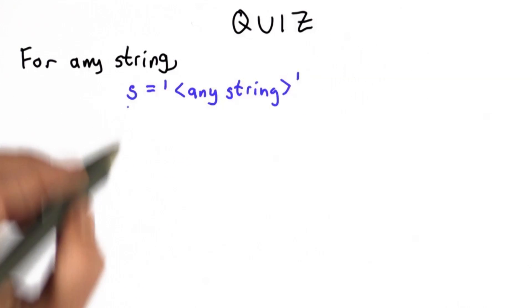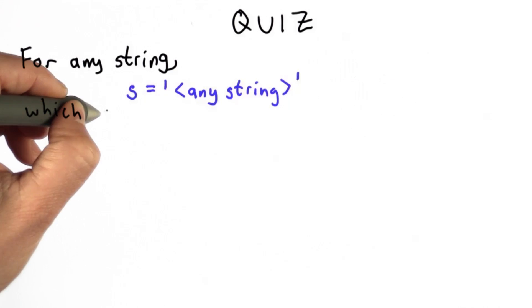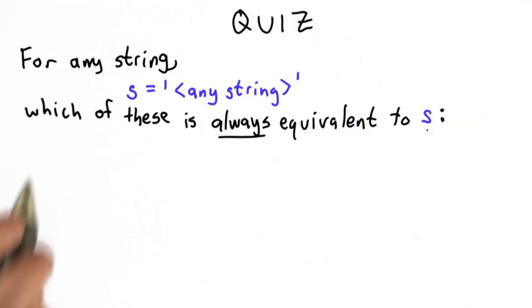So for this one, you're given any string s, so s is a variable. It holds the value of any string. And the question is, which of these are always equivalent to the string s, no matter what s was at the beginning?